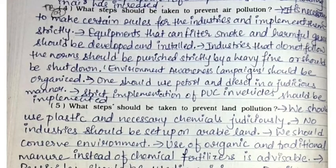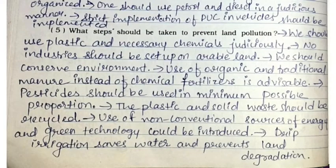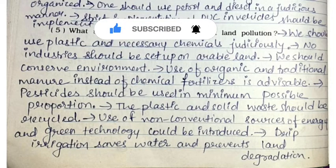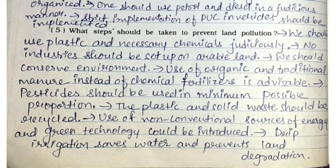Fourth question: what steps should be taken to prevent air pollution? It is necessary to make certain rules for industries and implement them strictly. Equipment that can filter smoke and harmful gases should be developed and installed. Industries that do not follow the norms should be strictly fined or shut down. Environment awareness campaigns should be organized. One should use petrol and diesel judiciously, and strict implementation of PUC in vehicles should be enforced. Fifth question: what steps should be taken to prevent land pollution? We should use plastic and chemicals judiciously. No industry should be set up on arable land. Use of organic and traditional manure instead of chemical fertilizers is advisable. Pesticides should be used in minimum possible proportion. Plastic and solid waste should be recycled. Use of non-conventional sources of energy and green technology could be introduced. Drip irrigation saves water and prevents land degradation.